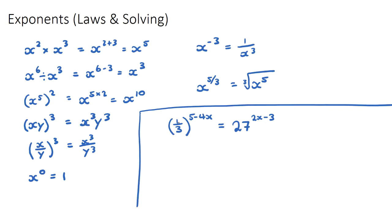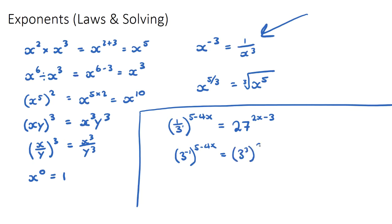What we want to recognize is that we have two different bases — a third and 27 — and we want to make them the same base. We can use 3 as the common base. A third is the same as 3 to the negative 1, and 27 is the same as 3 cubed. So we rewrite: (3 to the negative 1) to the power of (5 minus 4x) equals (3 cubed) to the power of (2x minus 3).